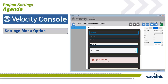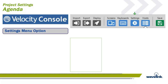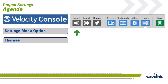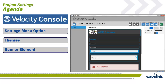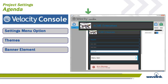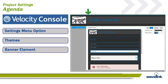In this module, we will discuss the Settings menu option. As the product matures, there will be more options available for this menu, but for now we will concentrate on themes. Themes are global settings for the predictive algorithm and can be used in many ways. Last, we will discuss the banner element and the unique settings that are available.